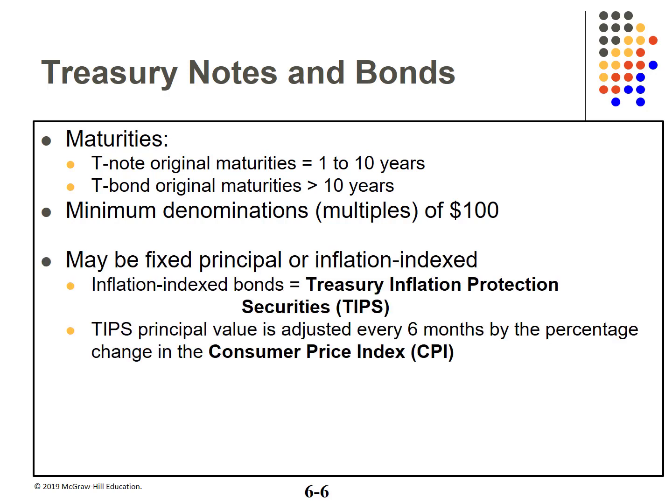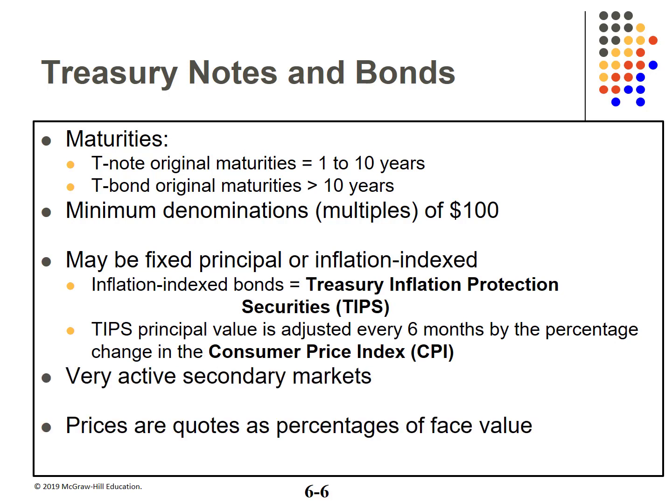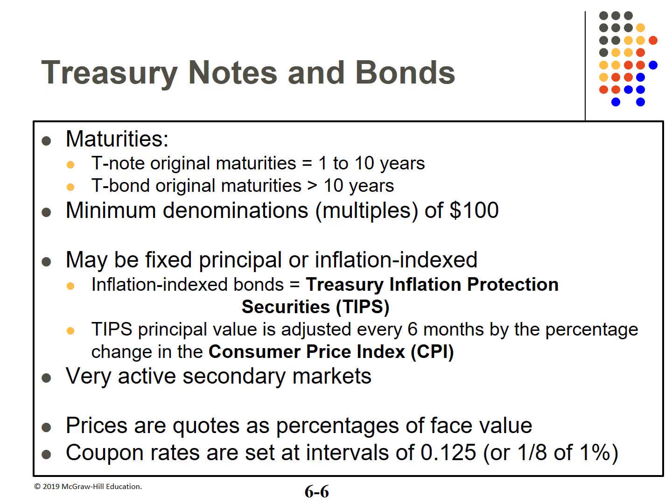The Treasury offers Treasury Inflation Protected Securities — TIPS. The principal value is adjusted every six months for inflation. The secondary market for treasuries is very active. Prices are quoted as percentages of face value. Coupon rates are set at intervals of an eighth of a percent, or 0.125.